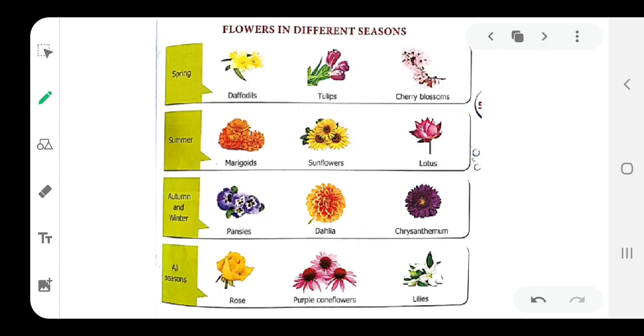Now we will study the different flowers in different seasons. There are many seasons like spring, summer, autumn, and winter. In the spring season, flowers include daffodils and cherry blossoms. You can see the pictures in your book. In the summer season, which is the hot season, we have marigold, sunflower, and lotus. In autumn winter, we have pansies, dahlia, and chrysanthemums.